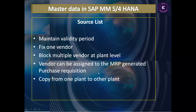The vendor can also be assigned to MRP-generated purchase requisitions. MRP — material requirement planning — is a functionality where we generate PRs, and we can maintain the vendor in that case as well. We will discuss MRP in detail. Additionally, we can copy source list records from one plant to another plant. These are the functionalities available in source list.